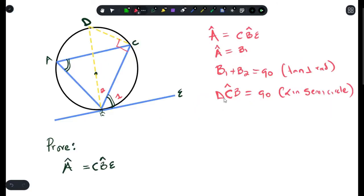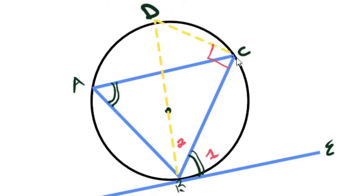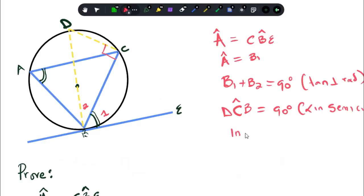We also see that angle DCB is equals to 90 degrees. DCB forms 90 degrees because DB is a diameter. We therefore, that is angles in a semicircle. And if you focus on triangle DCB, we understand that